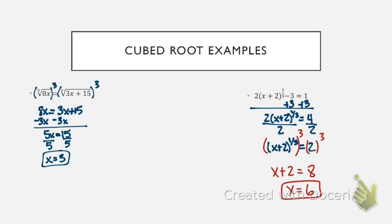So solving square roots, we square both sides of the equation, and we also need to check for extraneous. Solving cube root, we need to cube both sides of the equation, and the cubing will cancel out the cube root. But here, we do not need to check for extraneous because we can take the cube root of both positive and negative numbers.